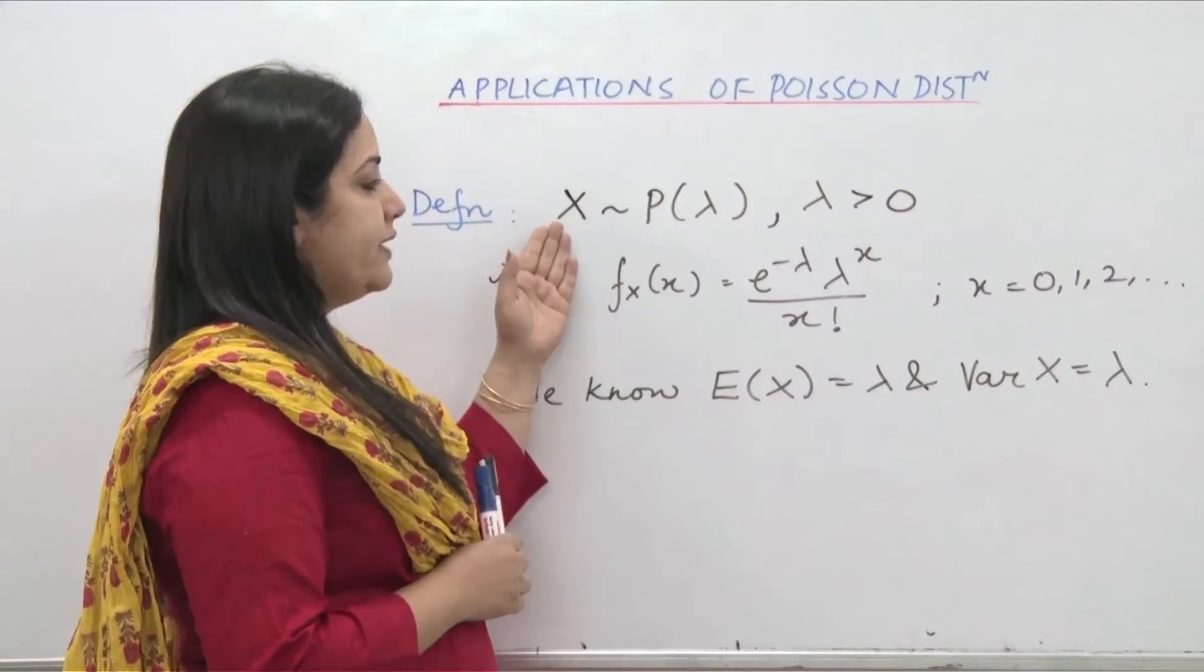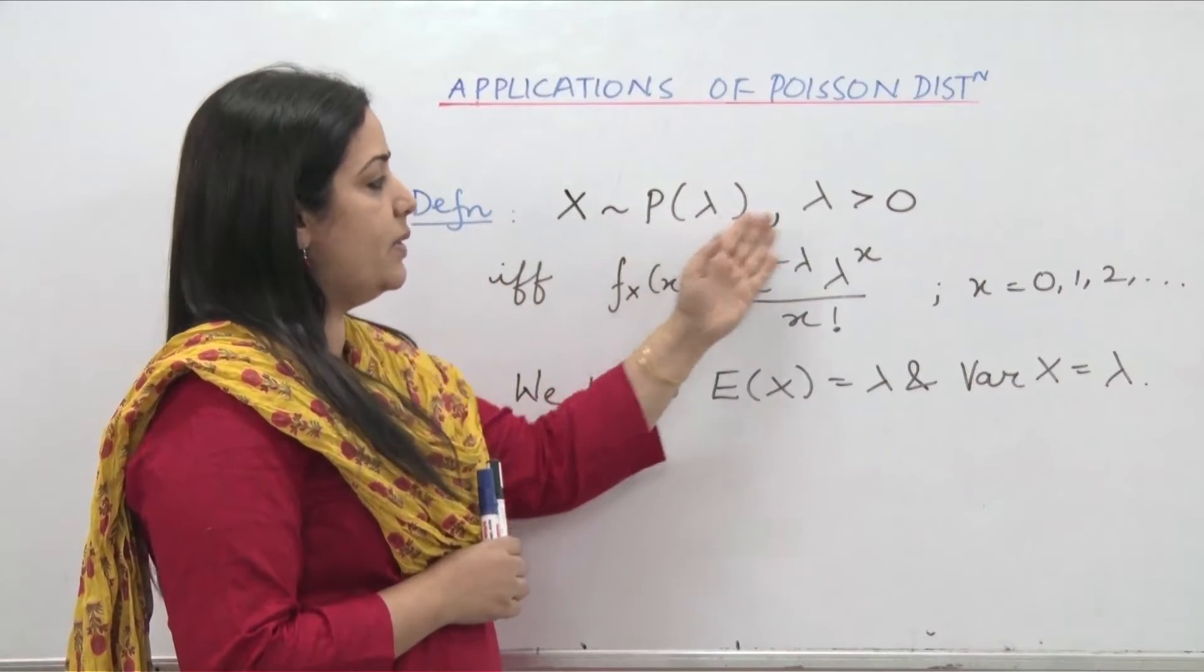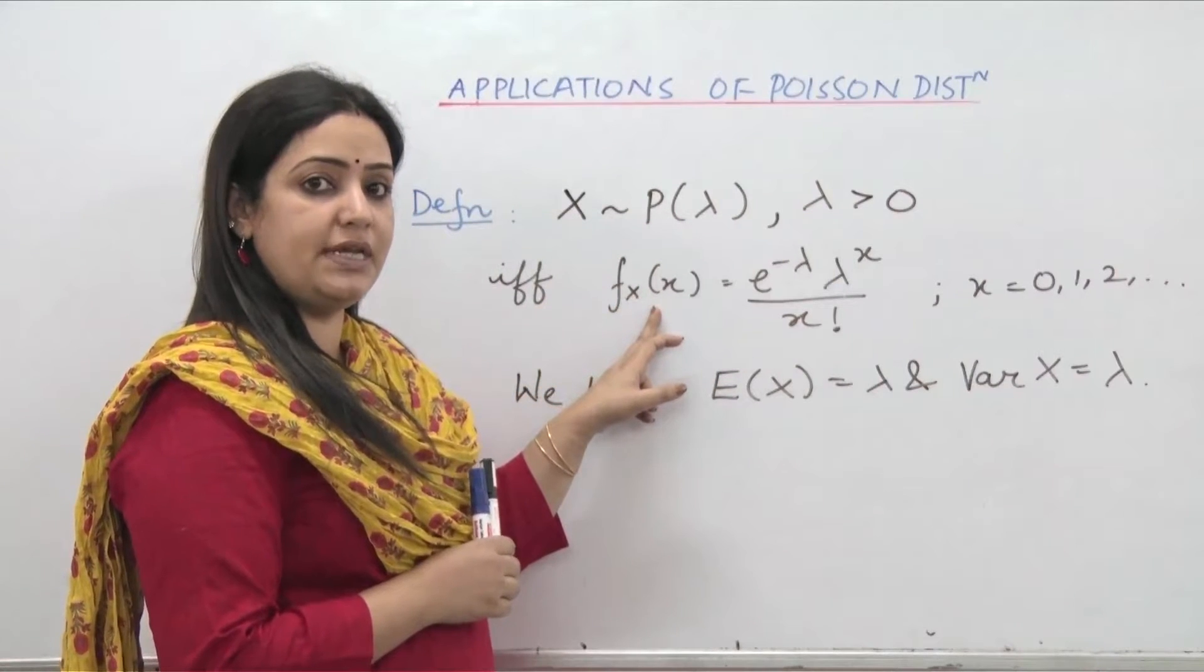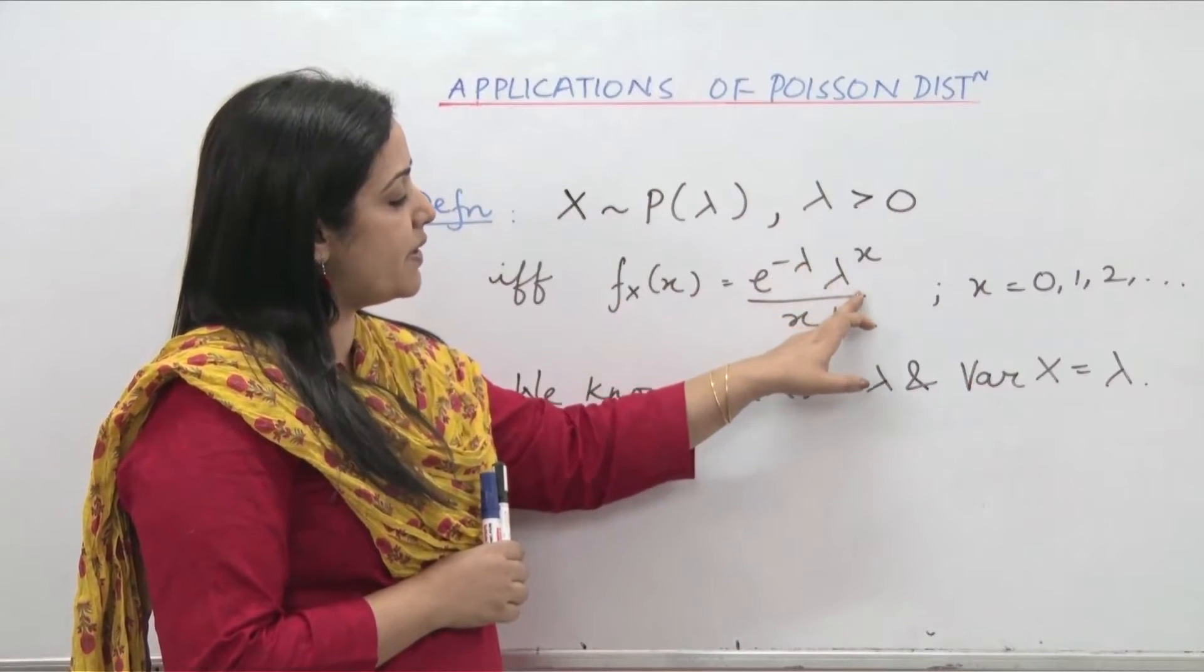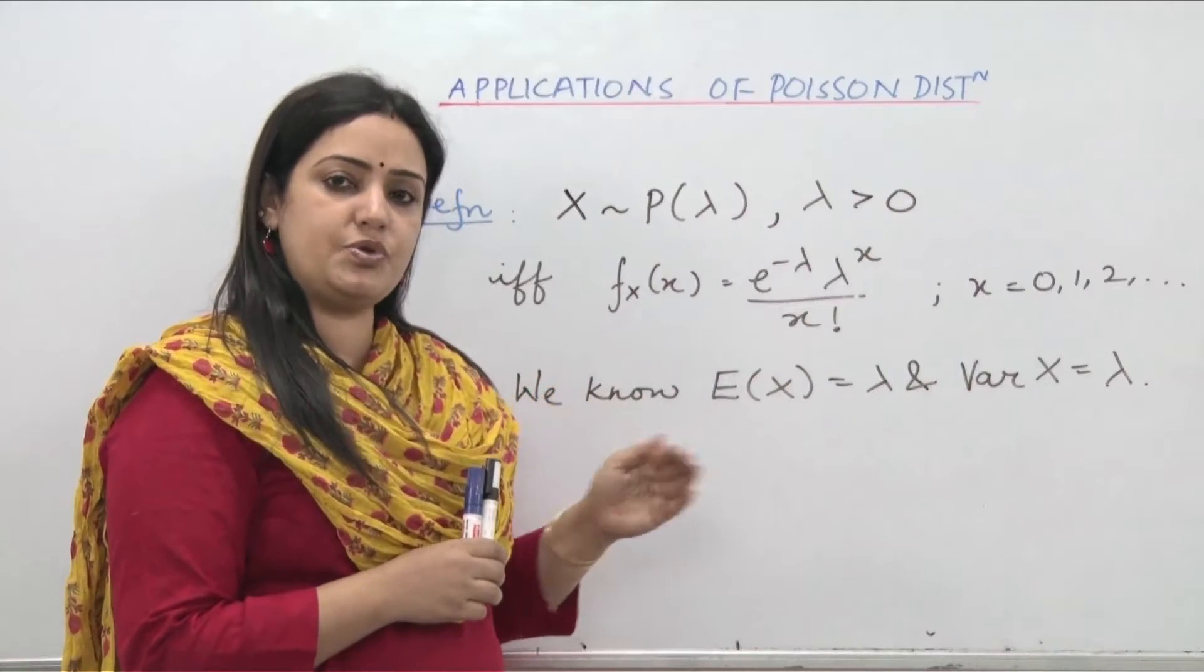A random variable x is said to follow Poisson distribution with parameter lambda where lambda is greater than 0 if and only if its probability density function pdf is given by e to the power minus lambda lambda to the power x upon x factorial where x takes values 0, 1, 2, 3, etc.